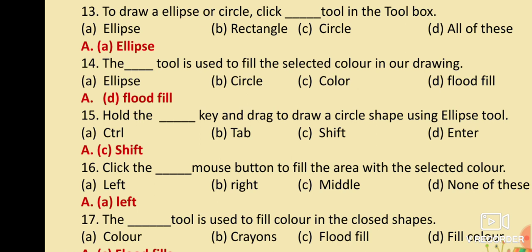MCQ No. 15: Hold the dash key and drag to draw a circle shape using the ellipse tool. Option A: Control. Option B: Tab. Option C: Shift. Option D: Enter. Your answer is Option C: Shift. Hold the Shift key and drag to draw a circle shape using the ellipse tool.